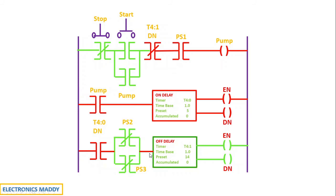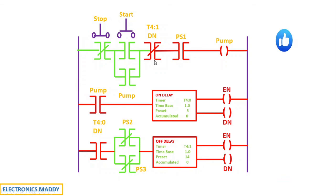After energizing an off-delay timer and then de-energizing it, the off-delay timer starts counting — this is according to the working of the off-delay timer. It's very important to understand the working of on-delay and off-delay timers; please watch my previous video where I've clearly explained that concept. Since the off-delay timer is now de-energized, the enable bit goes low instantly, and the off-delay timer starts counting the time in seconds. We have set it for 14 seconds, and until those 14 seconds are up, no other process will take place — even pressing PS2, PS3, start, or stop will not impact the ladder diagram. After 14 seconds, the done bit goes low, this normally closed contact becomes high and gets energized, and consequently the entire process can repeat again.